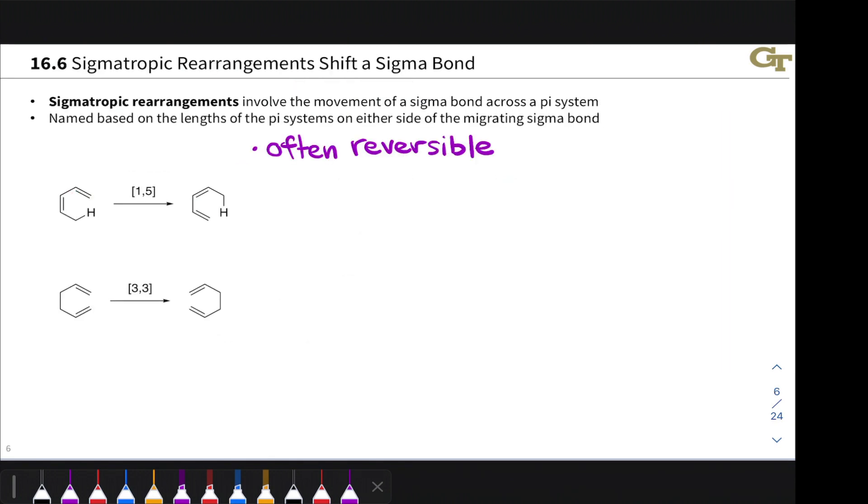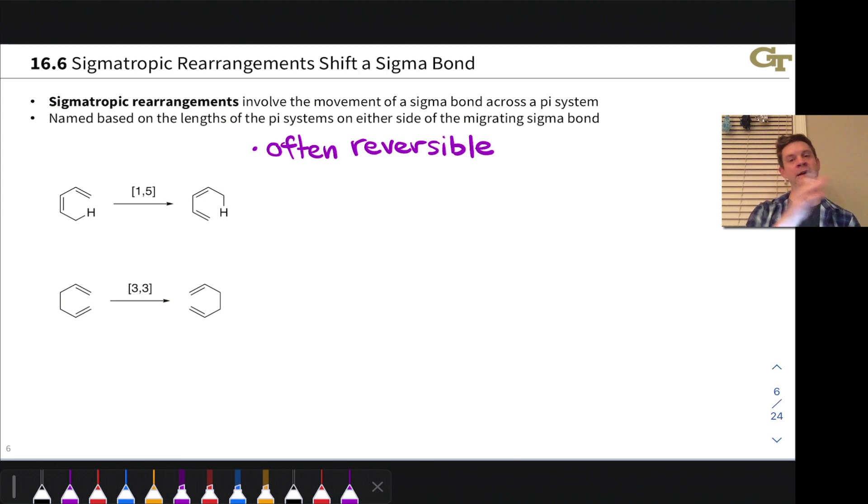In a sigmatropic rearrangement, a sigma bond moves across a pi system. And these are named based on the lengths of the pi system over which the sigma bond moves. And when a 1 is used, there's no migration at all. There's just an atom that's moving with the sigma bonding electron sort of along for the ride as that bond migrates along a pi system of some length.